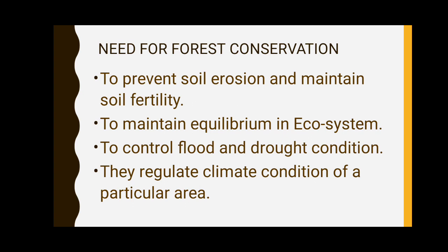Next, to control flood and drought conditions. Trees help a lot in controlling floods because trees reduce the velocity of water. In drought conditions too, trees are quite helpful. They regulate the climatic condition of a particular area. Where more and more trees are present, the temperature will be reduced compared to the place where more deforestation has occurred. Where there are more trees, the temperature will be lower, oxygen content will be higher, and environmental conditions will be more favorable.